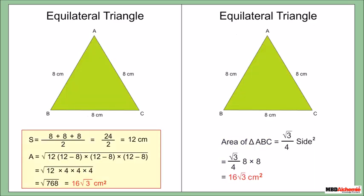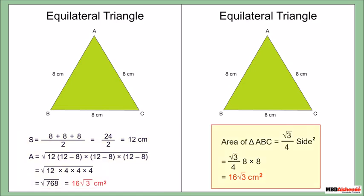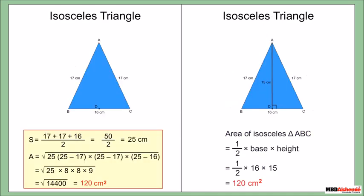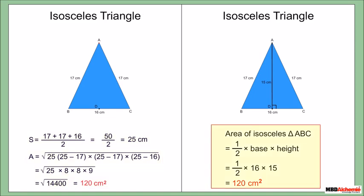Similarly, the area of the equilateral triangle is 16√3 cm², matching the result from the equilateral triangle formula. Likewise, the area of the isosceles triangle is 120 cm², the same as found using the isosceles triangle formula.